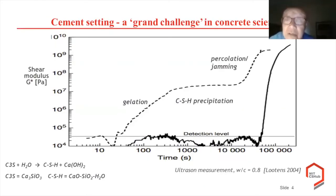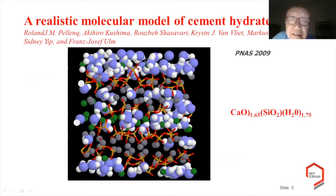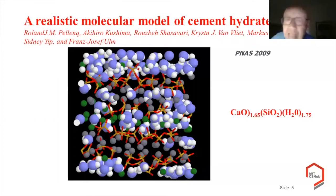That model was constructed by the hub, published, and used to try to understand the setting behavior. But through a number of years and collaborators, we found out that this model is not quite good enough to explain the phenomenon of setting. In particular, it's too small. With only about 150 atoms, the size of this system is only nanometers — tens of angstroms — and that's not big enough to have sufficient microstructure for things like porosity, gel pores, or capillary pores. So we had to go to the next step.